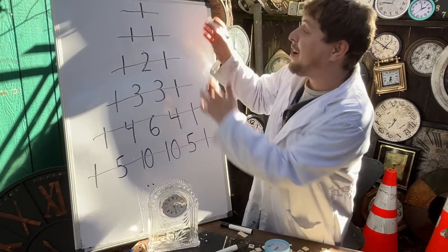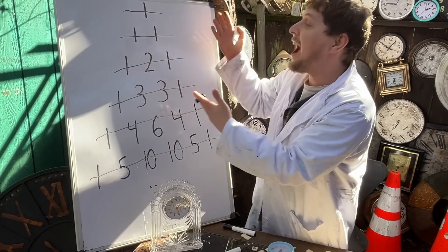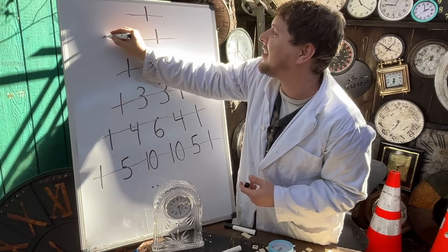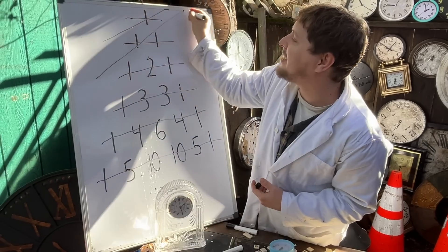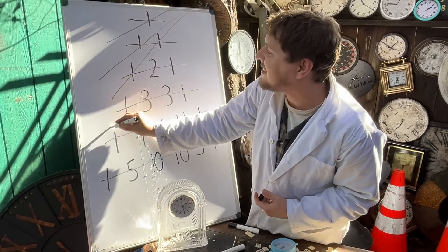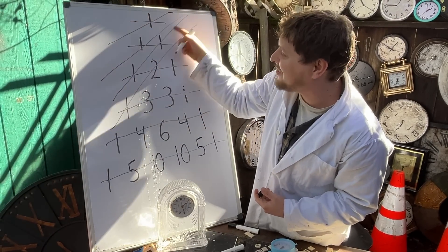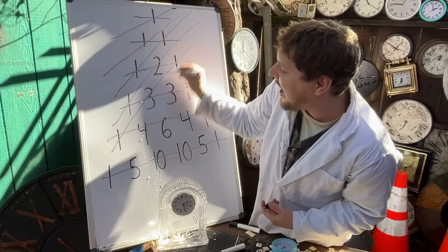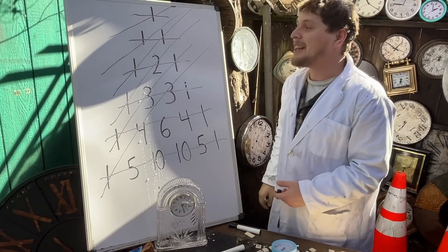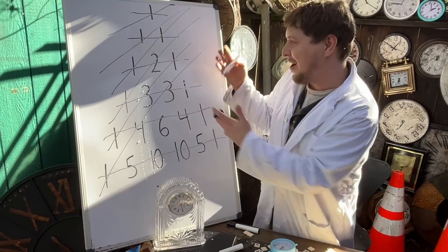If I add up slightly more diagonal crooked lines, looking at sort of skewed diagonals like this, the sums are 1, 1, 2, 3, 5, 8, and the rest of the Fibonacci numbers.